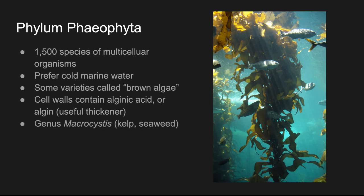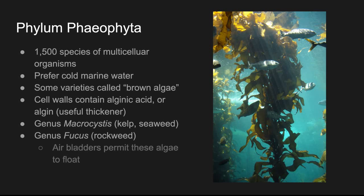Genus Macrocystis would include kelp and seaweed — obviously that's what that picture shows on the right. We've also got genus Fucus, called rockweed. They also have air bladders that permit these algae to float.